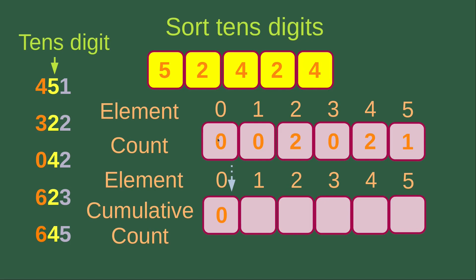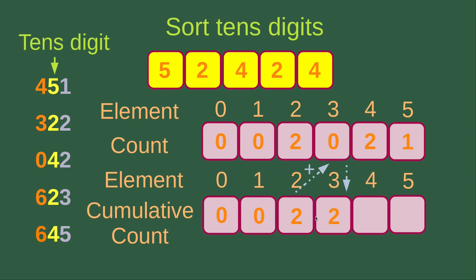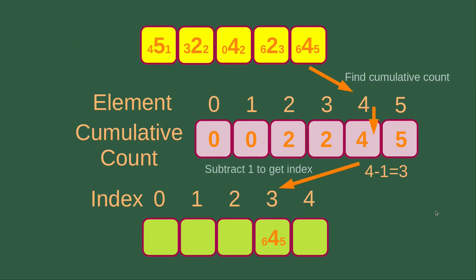Initially, the cumulative count of 0 is simply 0. Then I just add up the cumulative count for the previous element to the count of the current element to get the cumulative count of the current element. So I still get 0 for element 1. In this case, I will get 2 for element number 2. I would also get 2 for element number 3. I also get 4 for element number 4 (2 plus 2). And for element number 5, the cumulative count goes to 5. After the cumulative counts are found, I make use of them to sort out the numbers.